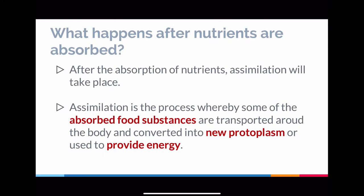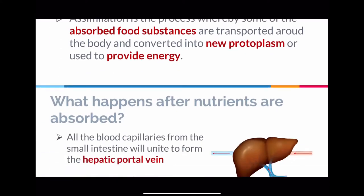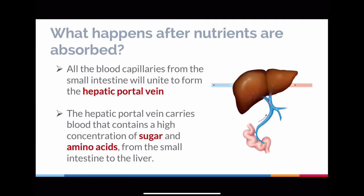So what happens after nutrients are absorbed? After the absorption of nutrients, assimilation should take place. Once nutrients go into the blood, they should be used for purposeful functions — they shouldn't just be flowing through the entire bloodstream. Assimilation is a process whereby some of the absorbed substances are used to either convert into new protoplasm, which forms structures for the cells, or to provide energy.